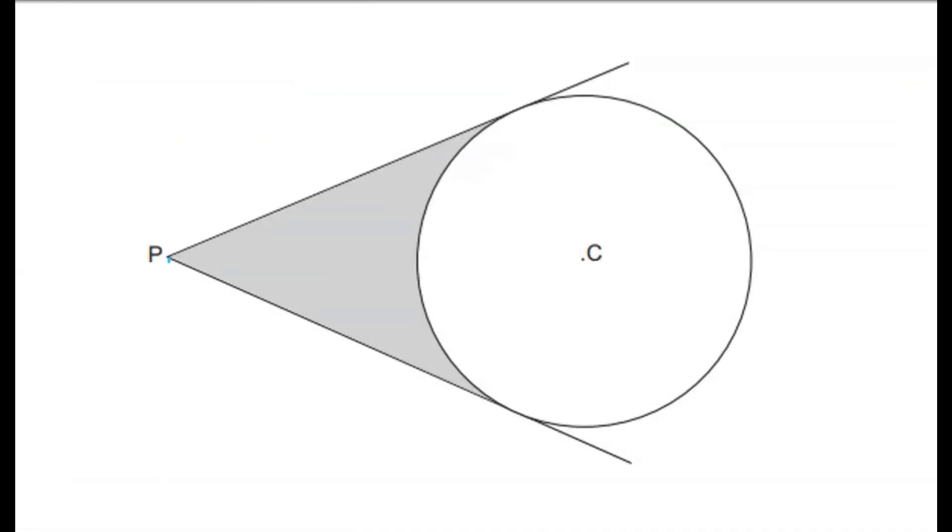So to start this problem, we'll label the two points where the tangent meets the circle as A and B. And then we'll also label in some of the information we're given in the question. So we're given that the radius of the circle is 10 centimetres. So we'll draw in the radii for BC and AC, which are both 10. And we're also told that point PC has length 20.